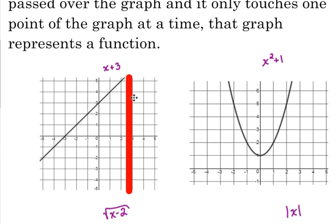x squared plus 1, if I take this vertical line over here and I pass it along my graph, same thing. At all times, at every x value, I'm only touching one y value. So that one is also a function.